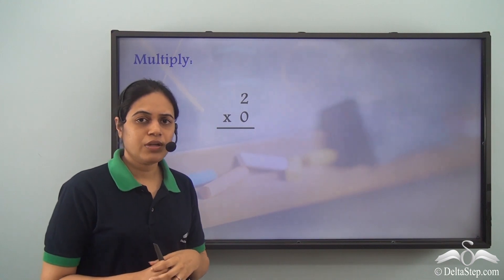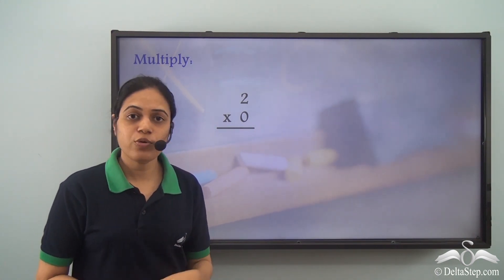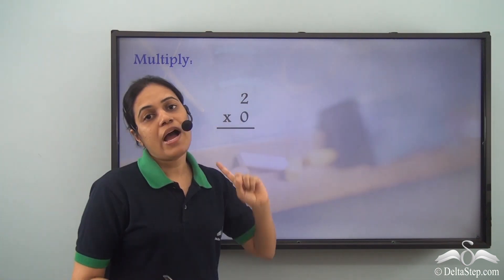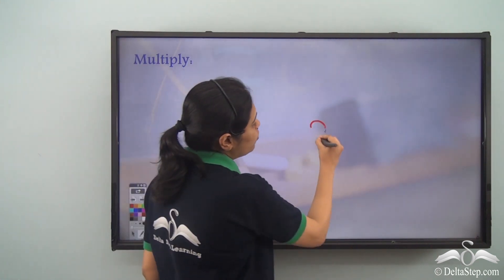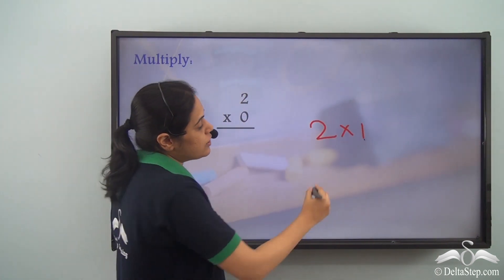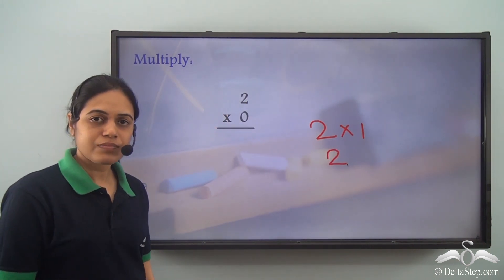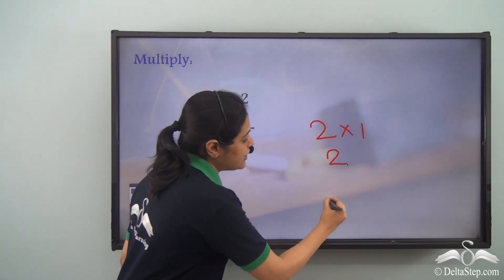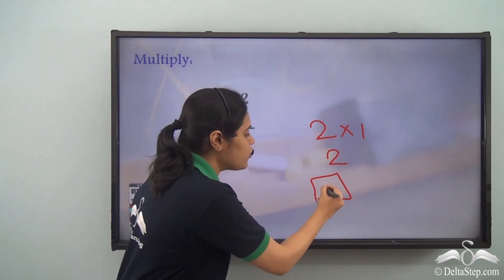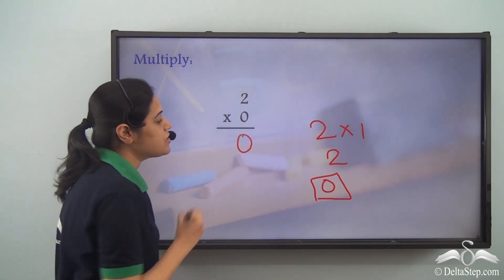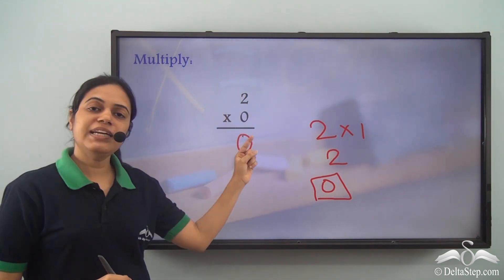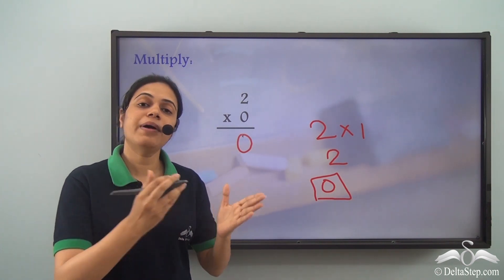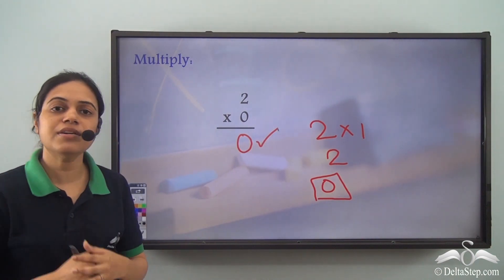What is 2 into 0? I don't know the table of 0, but 2 into 0 means 2 added 0 times. 2 into 1 is 2 once, but 2 into 0 means 2 added no times — so there is nothing, or 0. So any number multiplied by 0 will always give the answer 0.